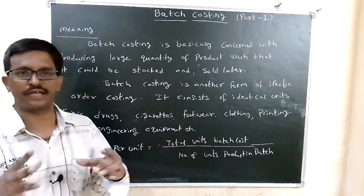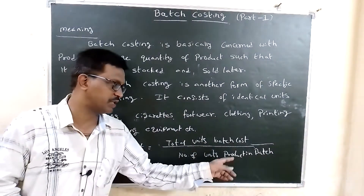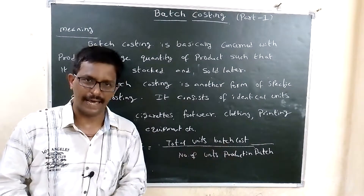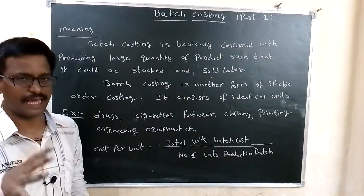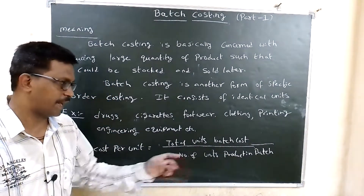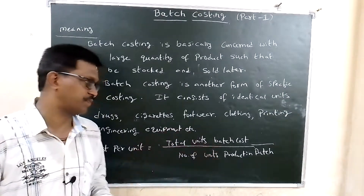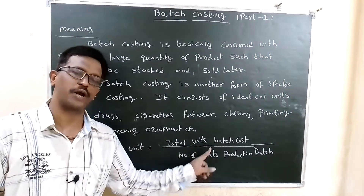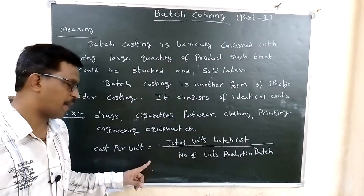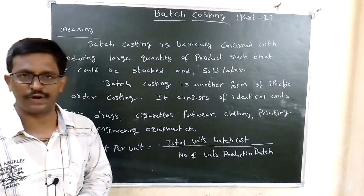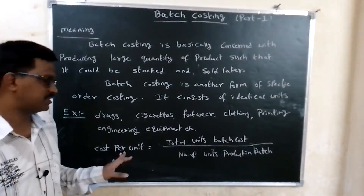What is the batch cost? The batch cost divided by the number of units produced in the batch gives the cost per unit. For example, if a batch costs Rs. 1 lakh and produces 10,000 units, the cost per unit is Rs. 10.